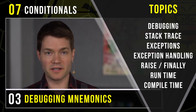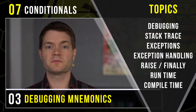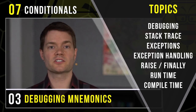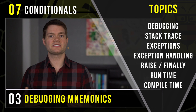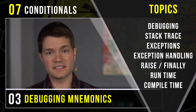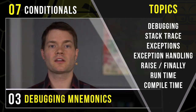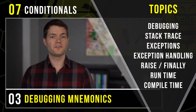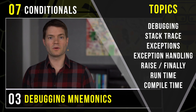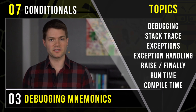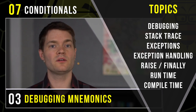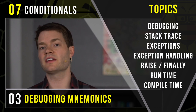Our first topic is debugging — what a bug is, the difference between bugs and features in the surprisingly gray area, and what the action of debugging actually looks like. Then we'll move to the stack trace: what it is and how to read it. We'll talk about exceptions, the difference between a syntax error and an exception, and exception handling. We'll also cover the keywords raise and finally, and what each one actually does.